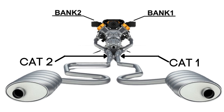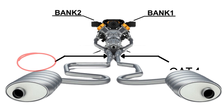Each bank has its own exhaust line, and each exhaust line is equipped with a catalytic converter. So when we talk about the Bank 2 catalytic converter, we are focusing on the catalytic converter specifically attached to the Bank 2 exhaust line.